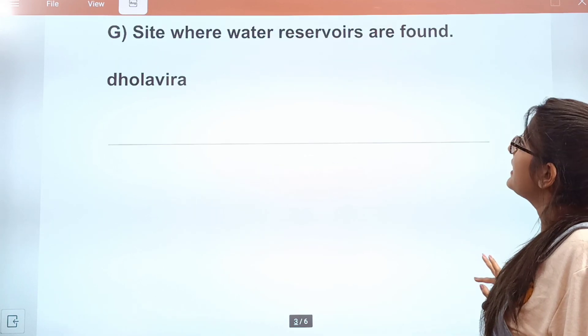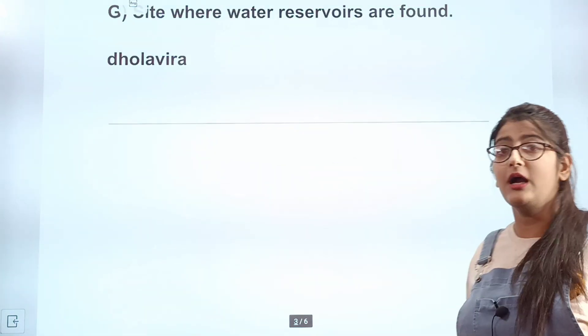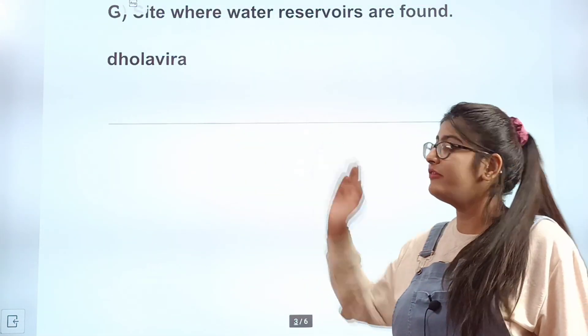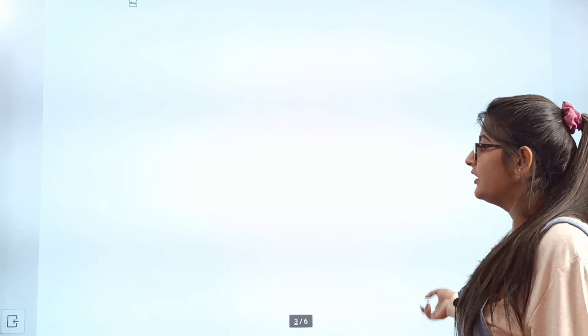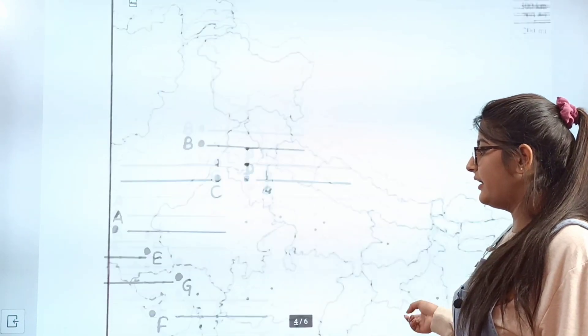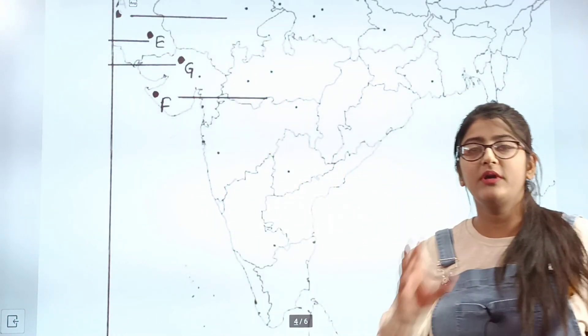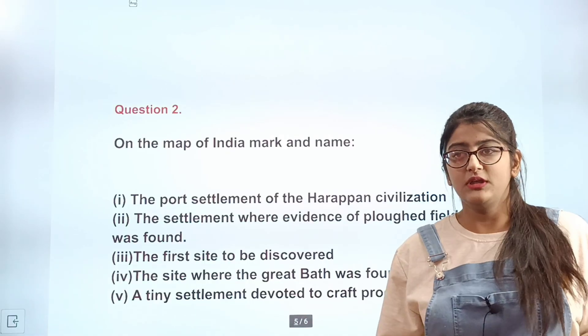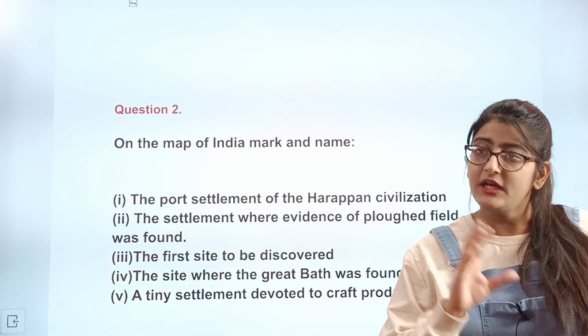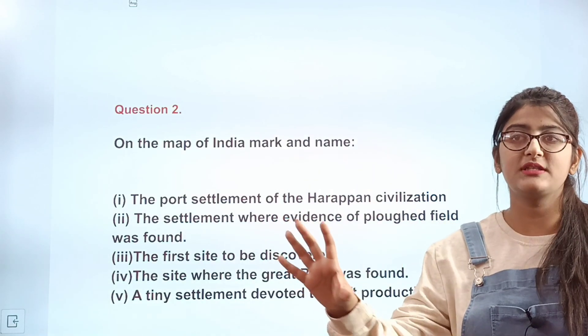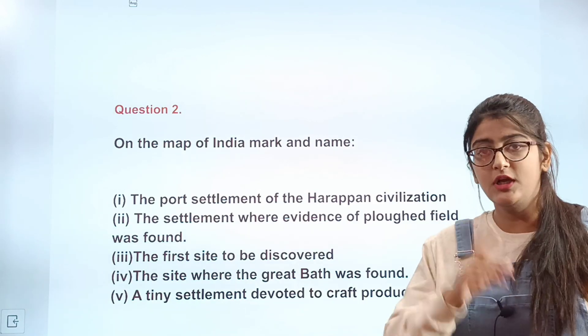Question G: the site where water reservoirs are found. This site is located in Gujarat. In this video I want to revise all these locations with you. Next we have some additional questions that can come in different forms, but these are the most important map questions.